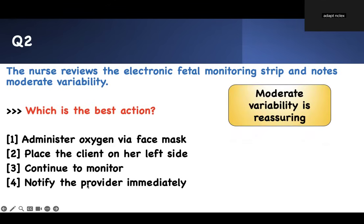Every question has a concept, and I want you to write it down so that you can master maternity in nursing school. Moderate variability means the heart rate goes up and down in the range of 6 to 25 beats per minute — that is good. Minimal or no variability is bad. Moderate variability is reassuring, so you continue to monitor.